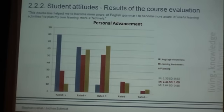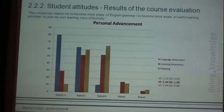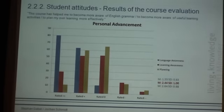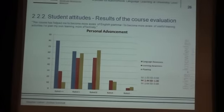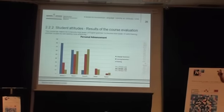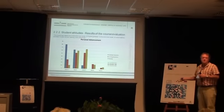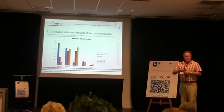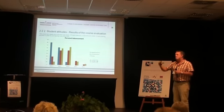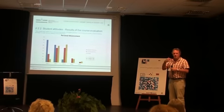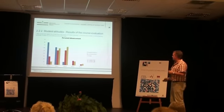We think this observation — that their language learning awareness and planning capacity hadn't improved so much — may have to do with the fact that they are very advanced learners already, who had received nine years of instruction in school plus one year at university. So as we guess, these processes may be such that in their own perception they didn't learn as much in these areas.